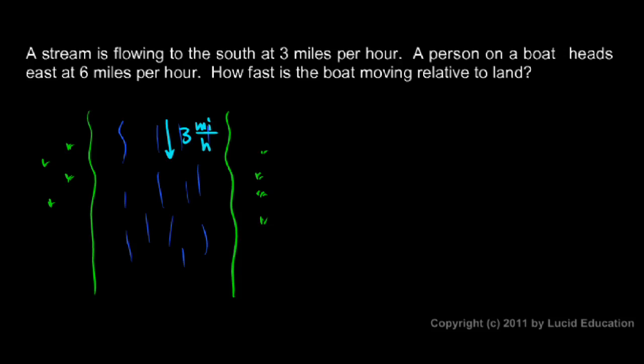Then we're told a person on a boat heads east at 6 miles per hour. So, let's draw a little boat in here. And here's someone there paddling their canoe. And so they're going east at 6 miles per hour. So, we'll draw a vector arrow here. And I'll draw this arrow a little bit longer. And I'll write 6 miles per hour.